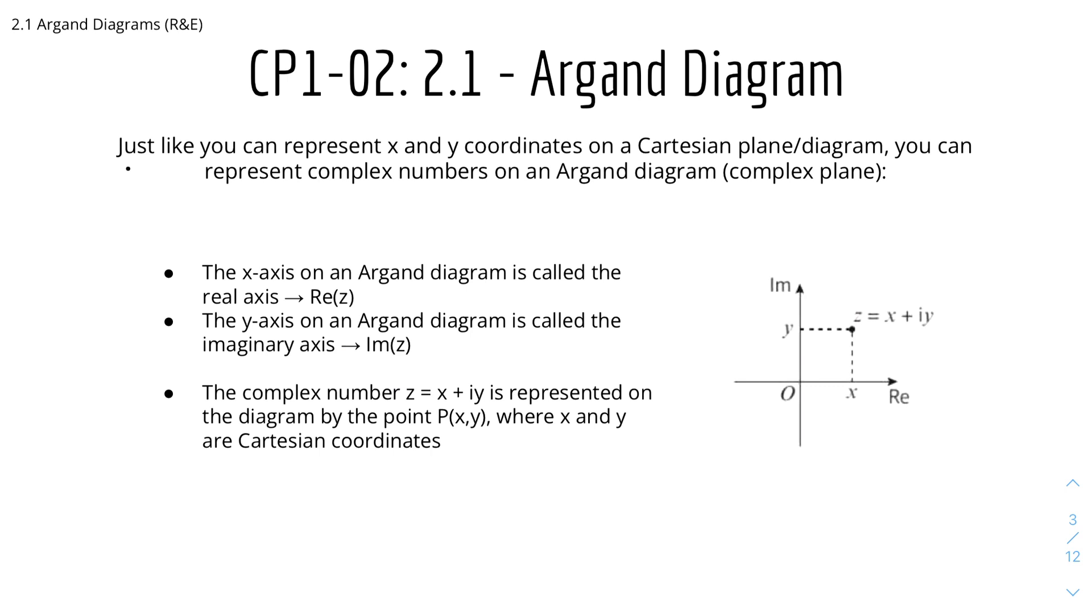Let's get started with Argand Diagrams. Just like you can represent x and y coordinates on a Cartesian plane or diagram, you can represent complex numbers on an Argand Diagram, which is basically called the complex plane. The x-axis on an Argand Diagram is called the real axis and it's represented as Re. The y-axis on an Argand Diagram is called the imaginary axis and it's represented as Im for imaginary.